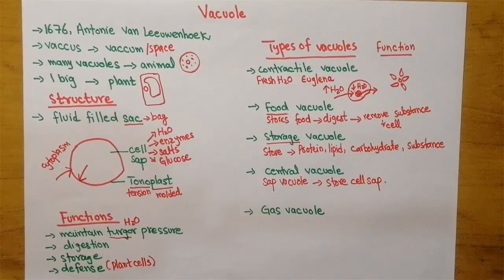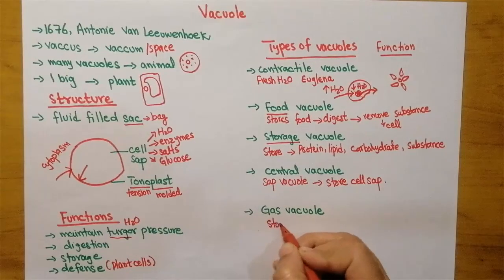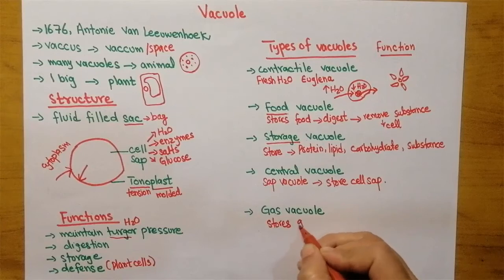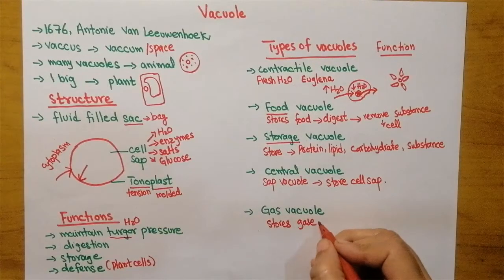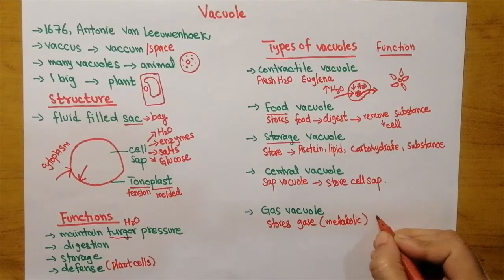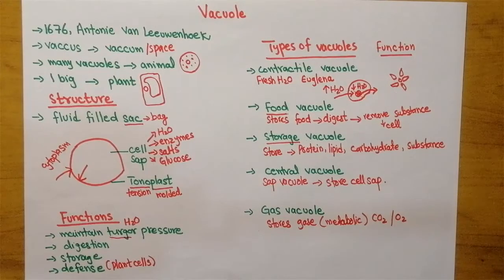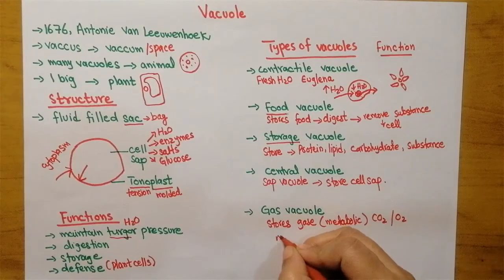The last type of vacuole is gas vacuole. It stores gases - these gases are actually metabolic gases, maybe carbon dioxide, maybe oxygen, or any other gas produced inside a living cell. Not only do they store metabolic gases, but they also provide mechanical strength to the cell.